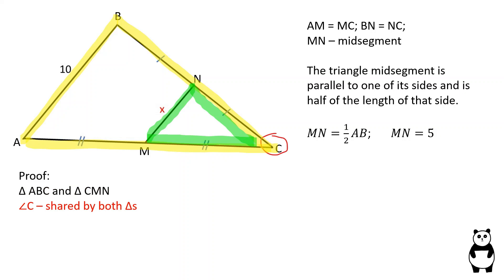Angle C is shared by both triangles. CN over BC is equal to 1 over 2, because BN is equal to NC.